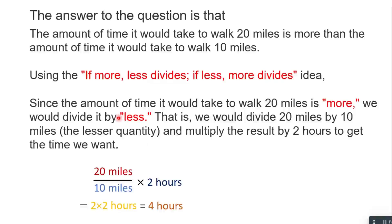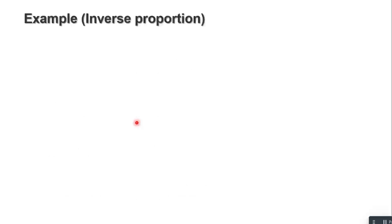To summarize: you first ask yourself whether the quantity you are looking for is more or less than what you already know. If it is more, we say 'less divide' — meaning we divide by the smaller value. If the quantity you are looking for is less than the one you already know, then we say 'more divide.' Since 20 miles needs more hours, we apply 'less divide.'